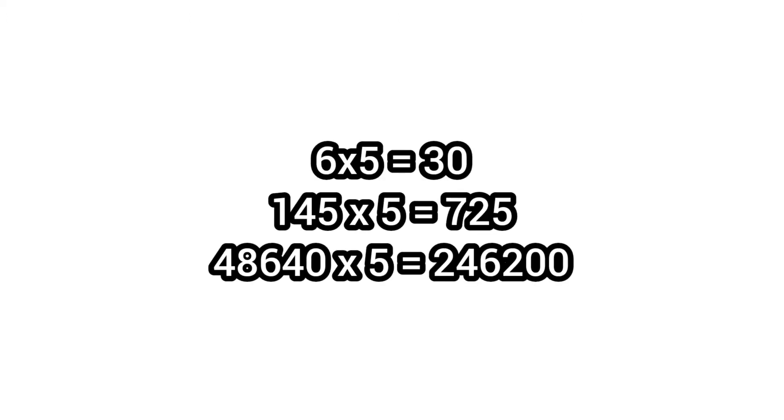Welcome guys to Genius in All Subjects. Multiply any number by 5 in seconds. 6 times 5 equals 30. 145 times 5 equals 725. 48,640 times 5 equals 246,200.